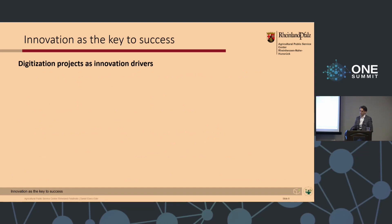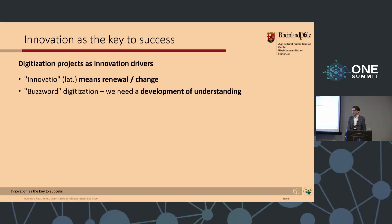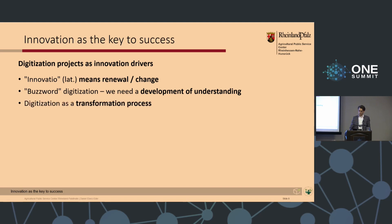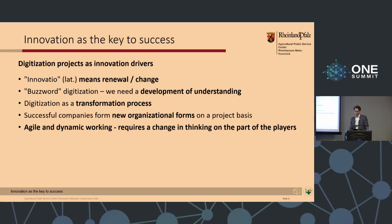On the one hand we have a classic sector like agriculture, and then the tech sector. Agriculture has historically always been a driver of innovation, so we also want to generate innovations here through projects such as resilient smart farming. We need a renewal of the status quo of technologies. We need urgent development of understanding that digitization is a transformation process and not a hype or a buzzword.